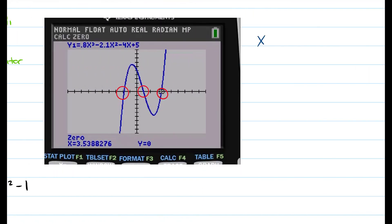And for our zeros, we're going to get x is equal to negative 1.862, x is equal to 0.948, and our last one, x is equal to 3.53. And that's how you use a calculator to find the zeros of a derivative.